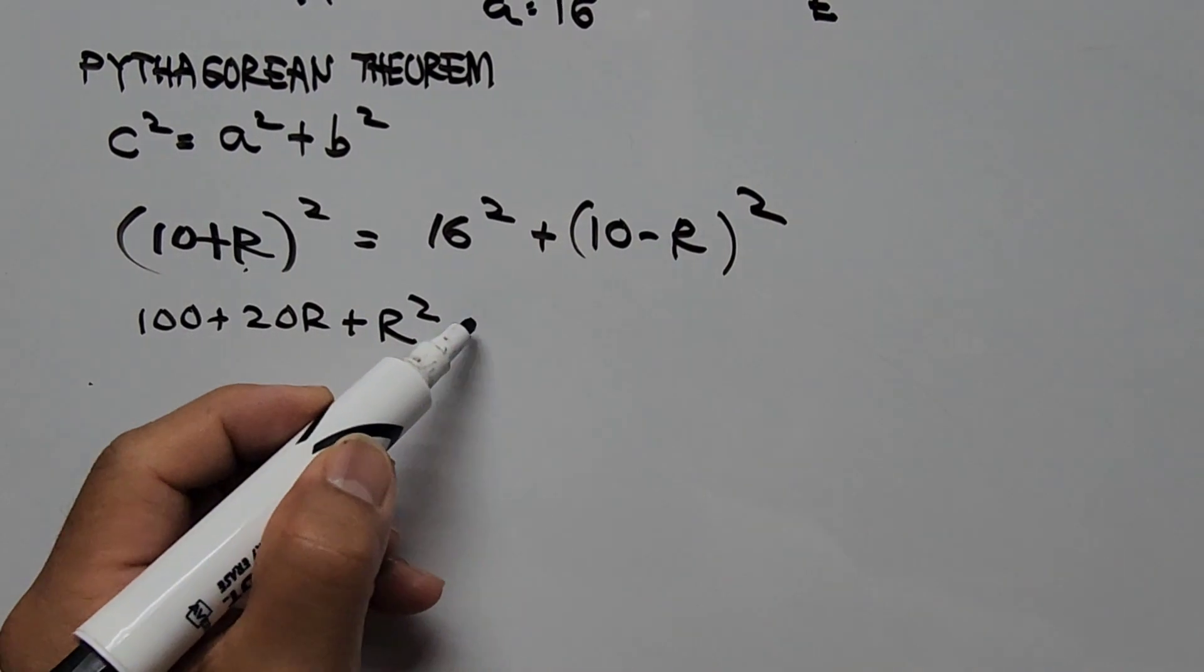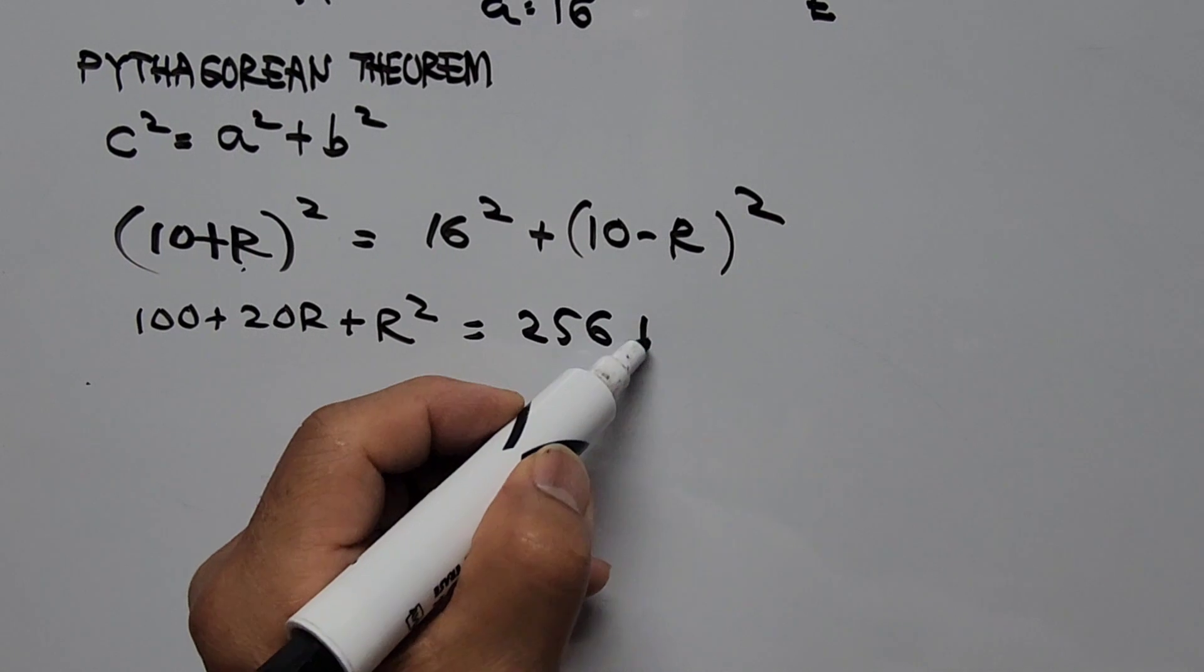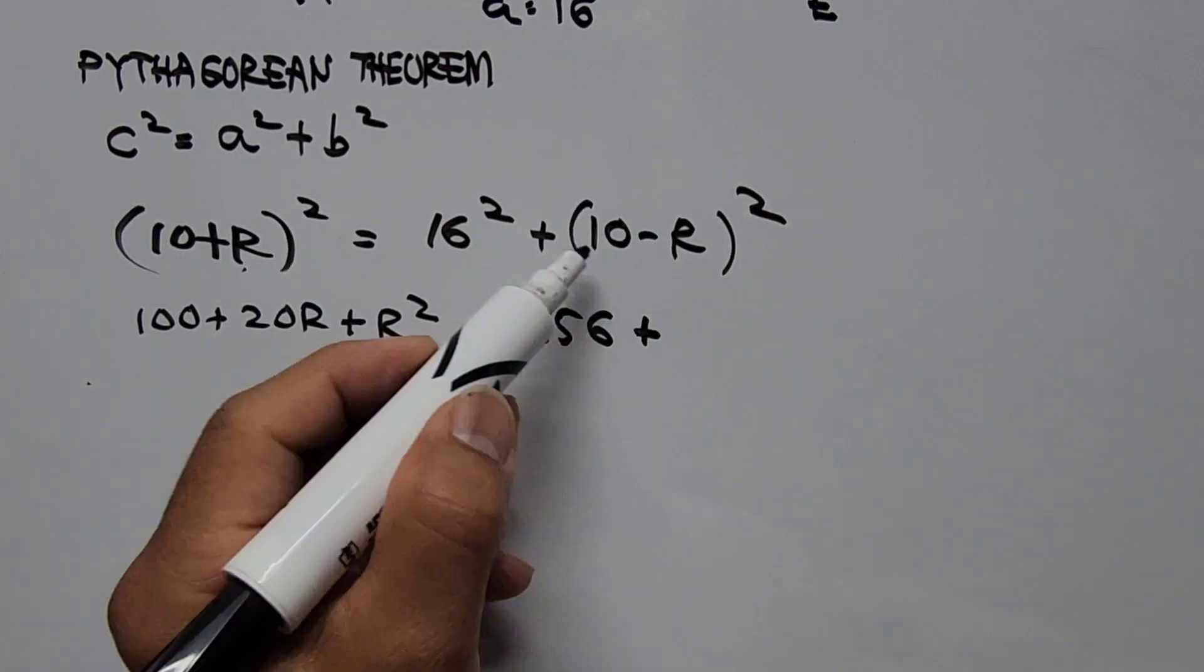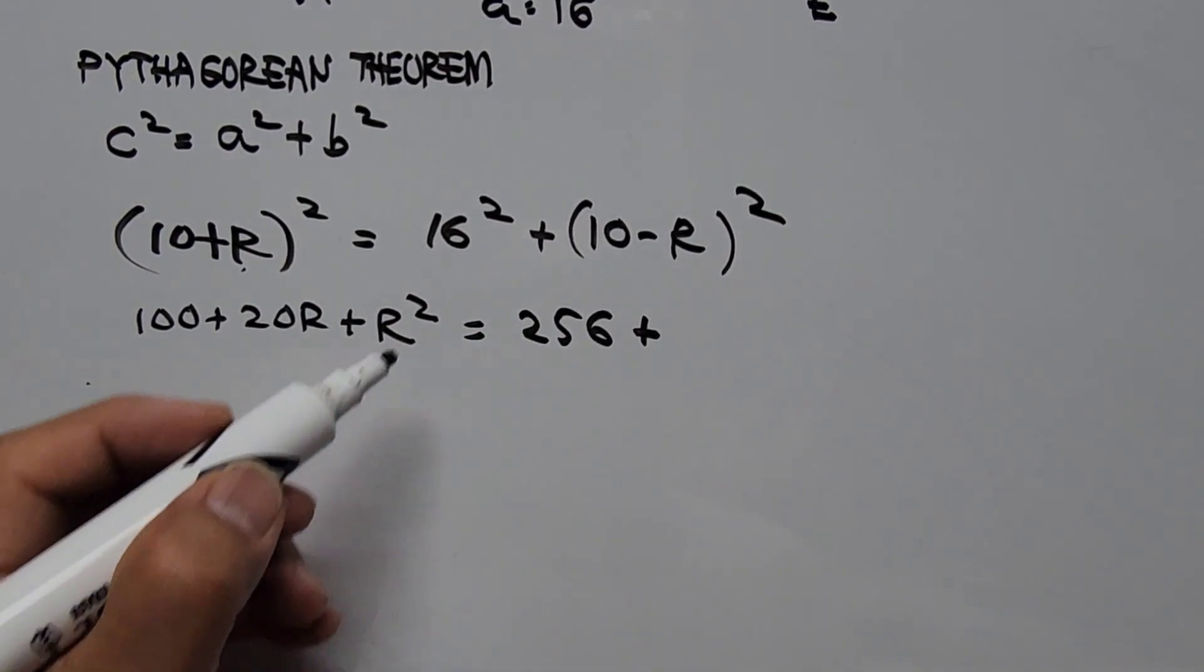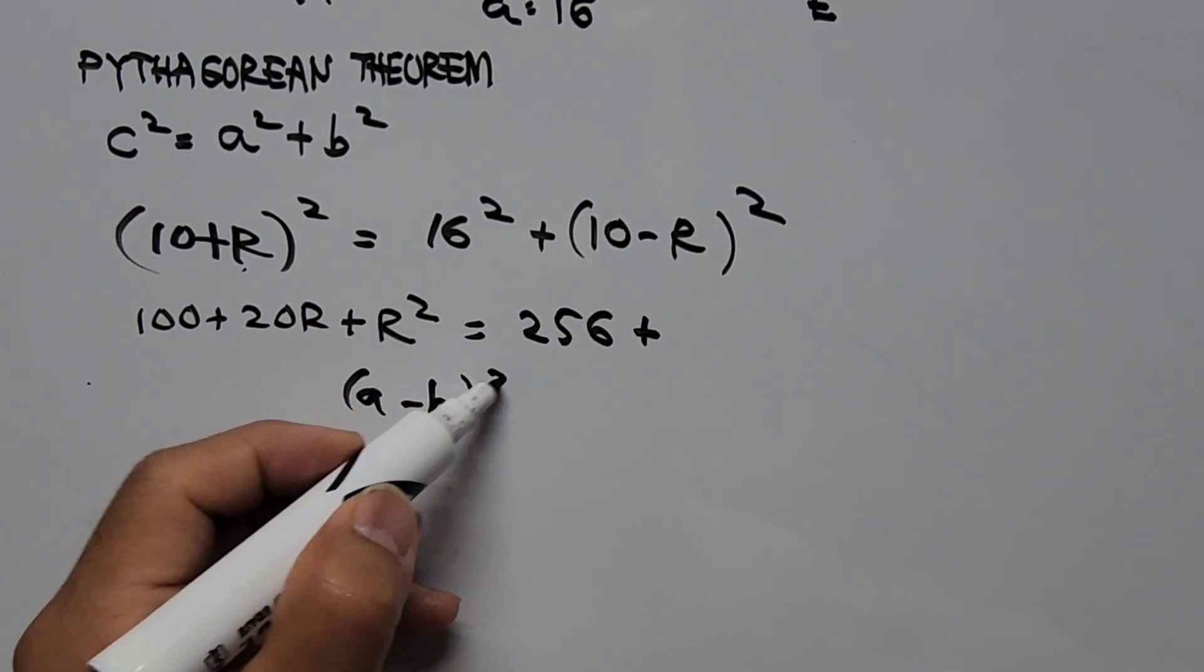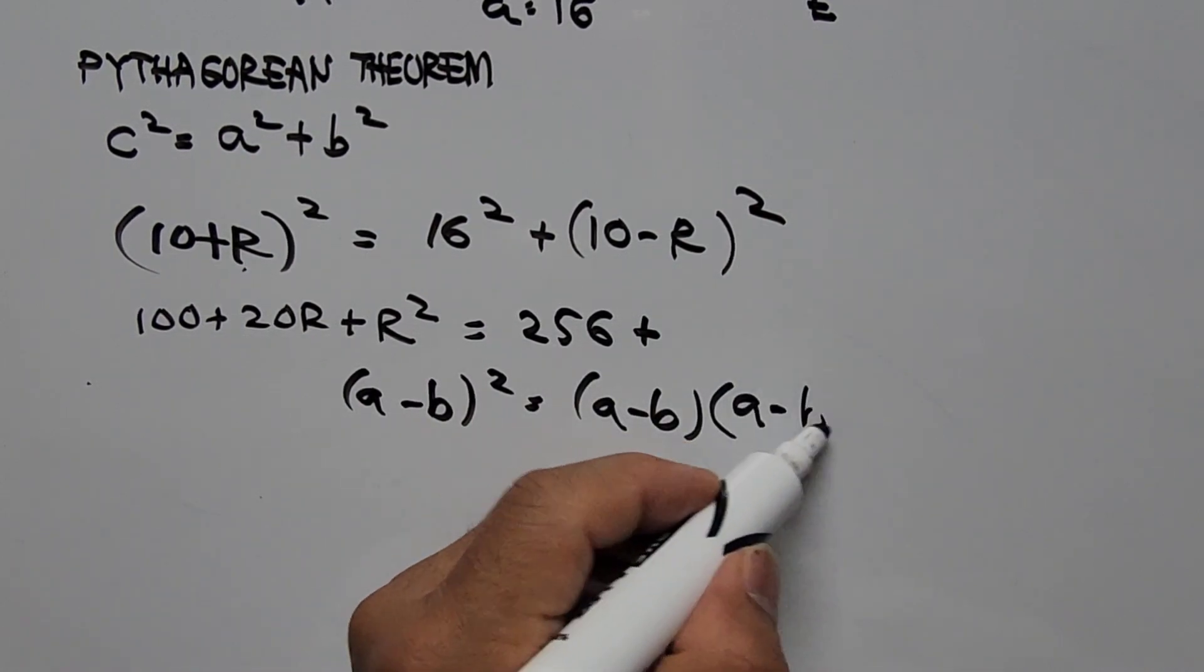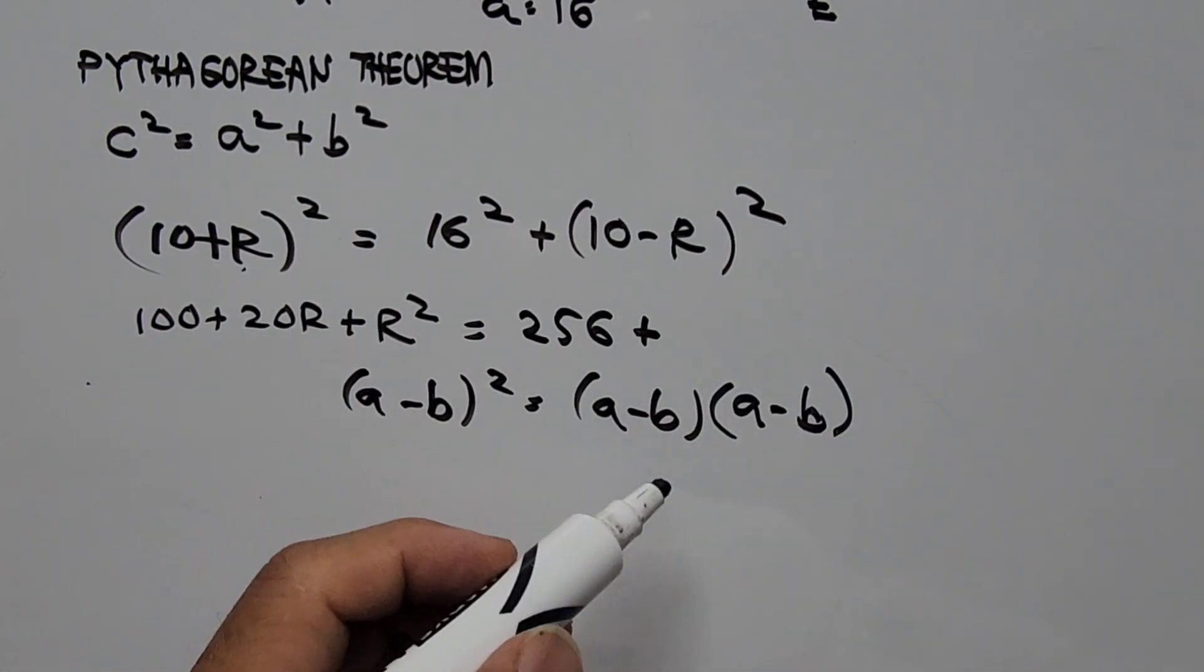On the right hand side, 16 squared is 256 plus square of the difference of two numbers. So we have here the formula that is A minus B squared is the same as A minus B times A minus B.